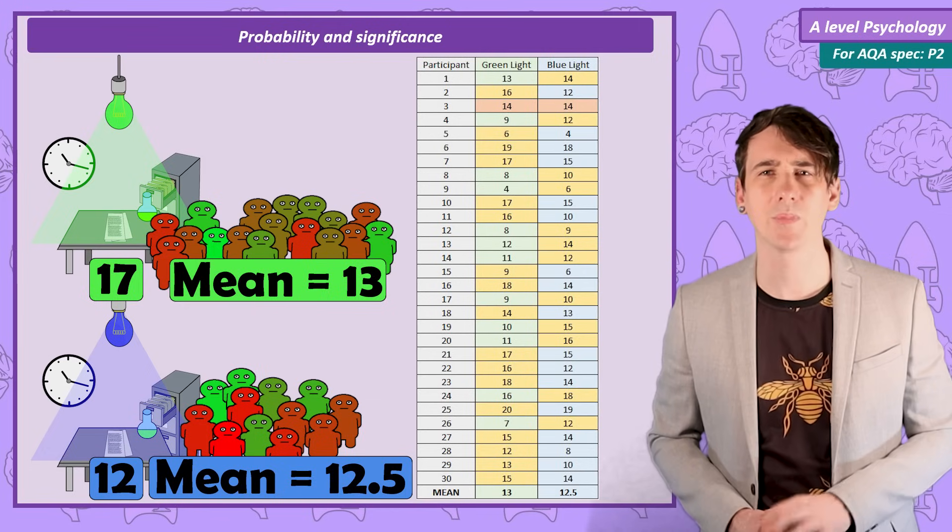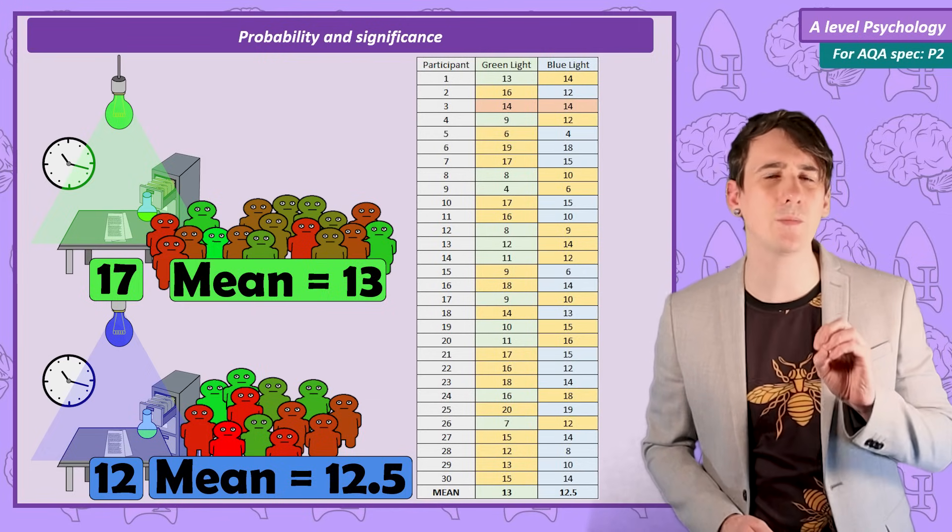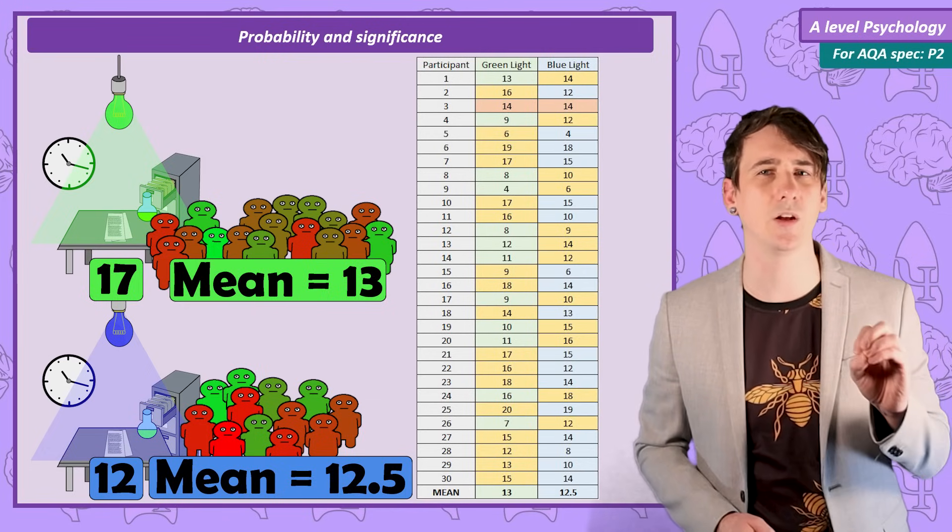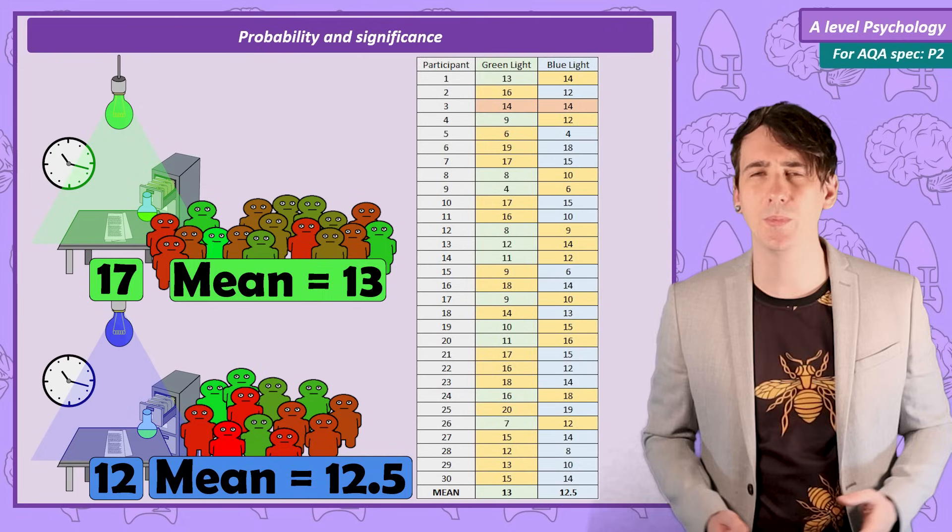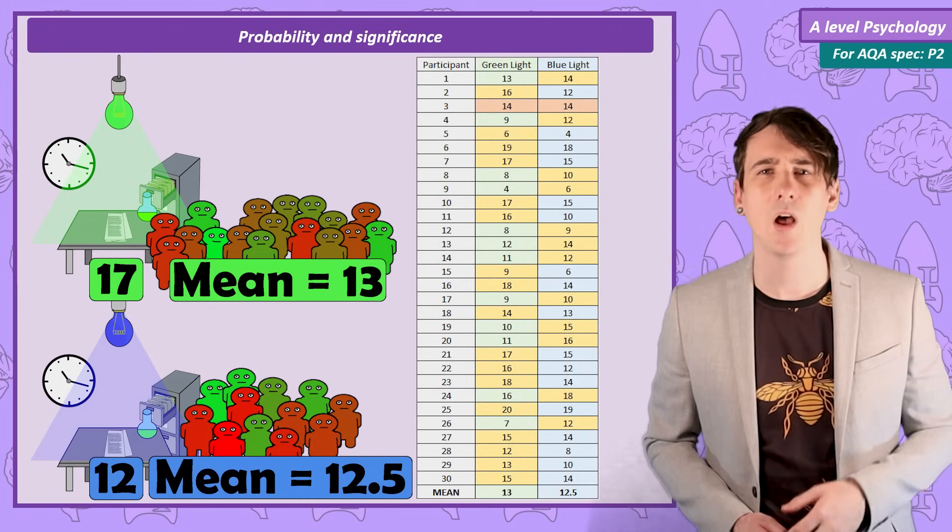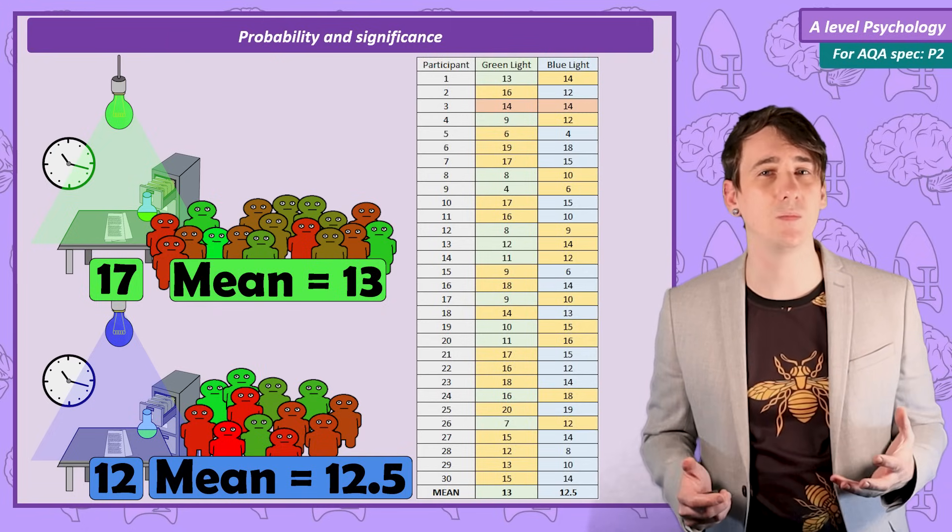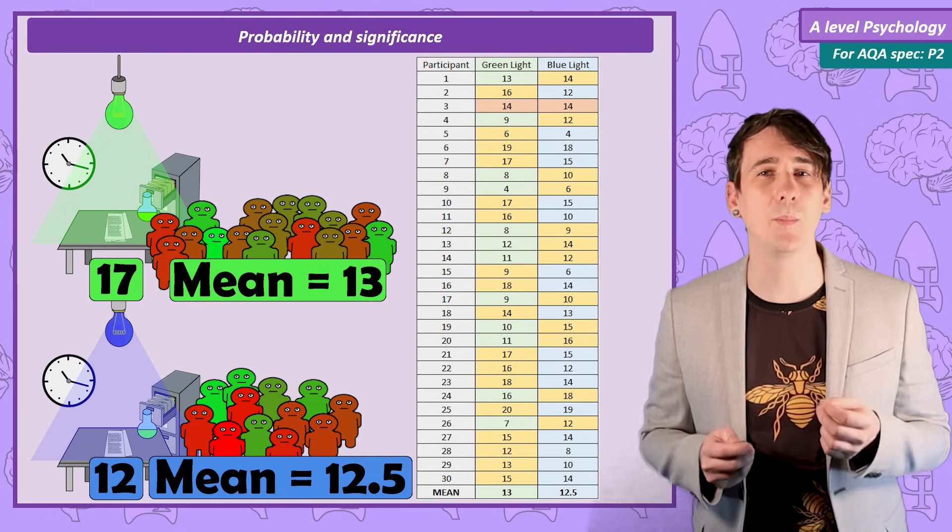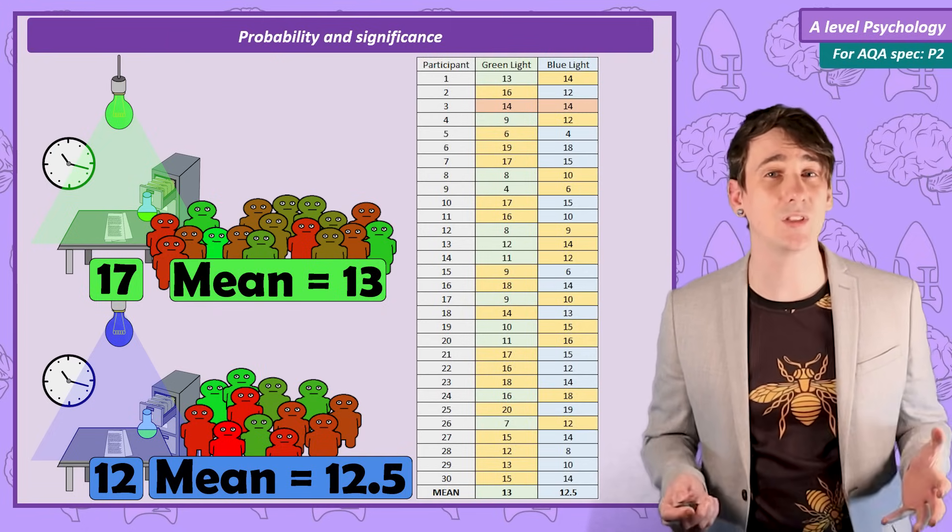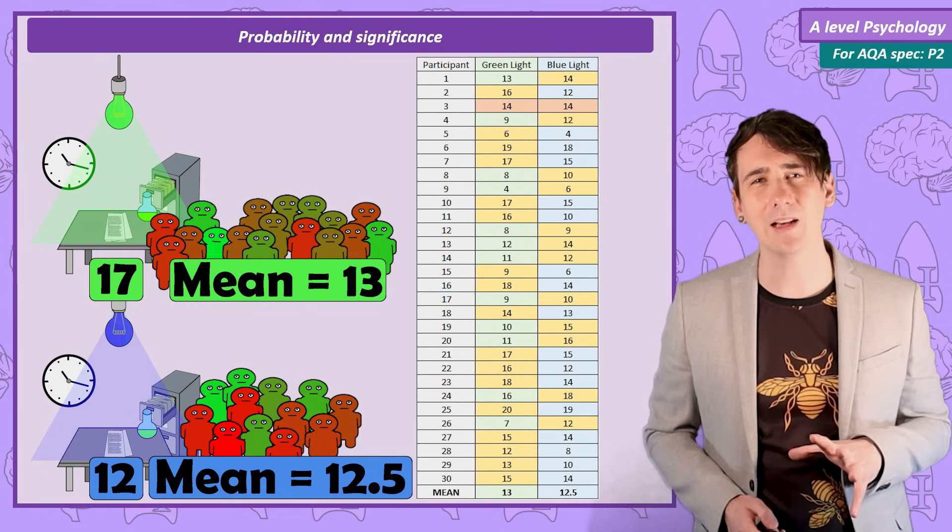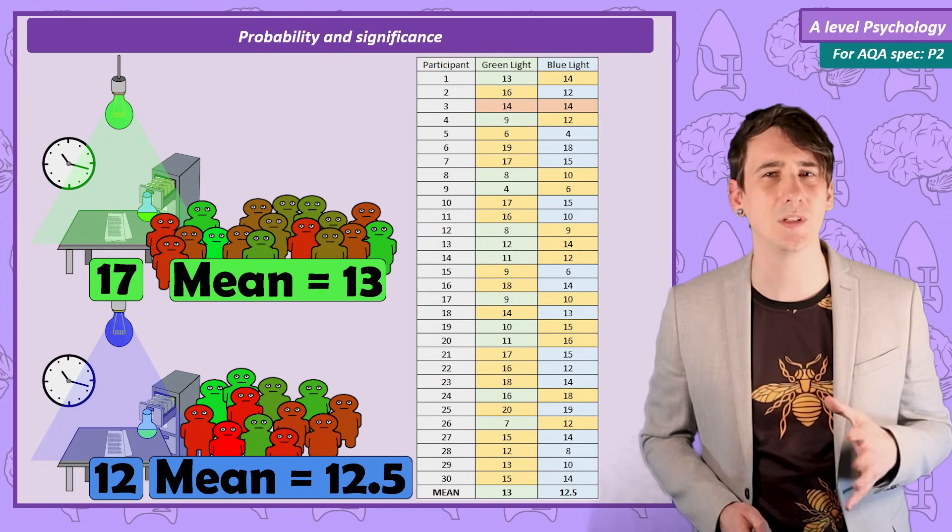You can see the problem. This data, even though it has just about gone in the direction suggested by an alternate hypothesis, it is not particularly strong. Only a few more people recalled more in green light, and almost as many had better recall in the blue light condition. The data just isn't strong. It is highly likely the difference that we have recorded is due entirely to chance.